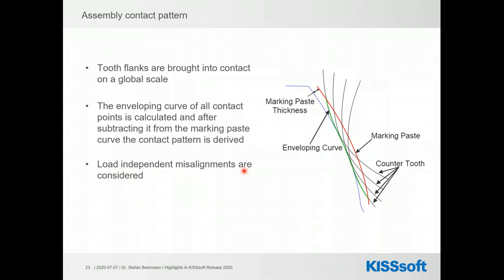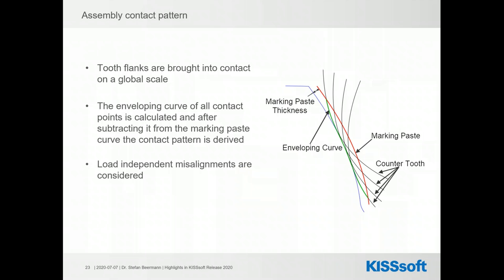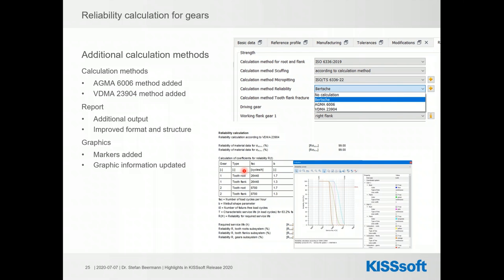Load-independent misalignments such as assembly errors, tooth modifications, and lead errors are all taken into account. Load-dependent misalignments such as shaft deflection are not taken into account for this calculation. For the reliability calculation, we added two more methods: so far we had the method according to Berger (a textbook method); now we added the method from AGMA 6006 and from VDMA 23904. In the software you simply select which method you want and the respective calculation is performed.